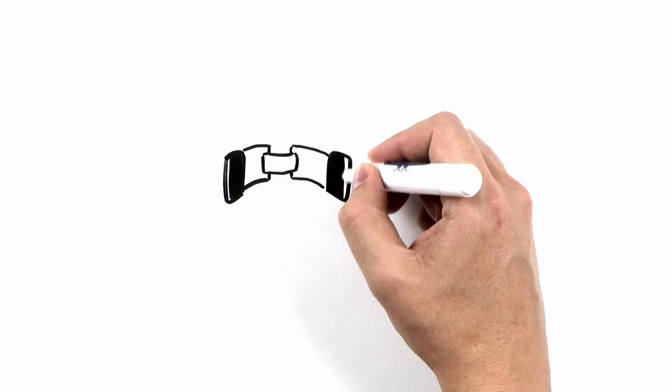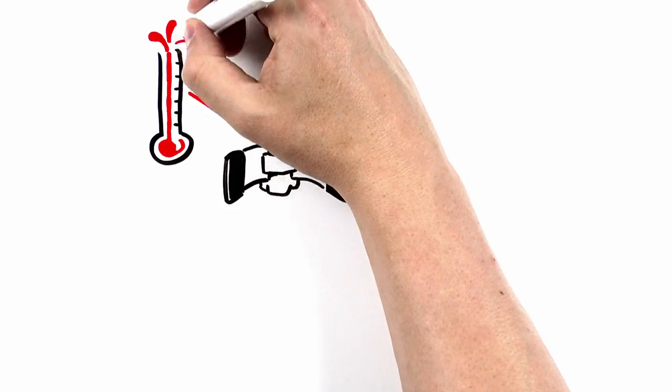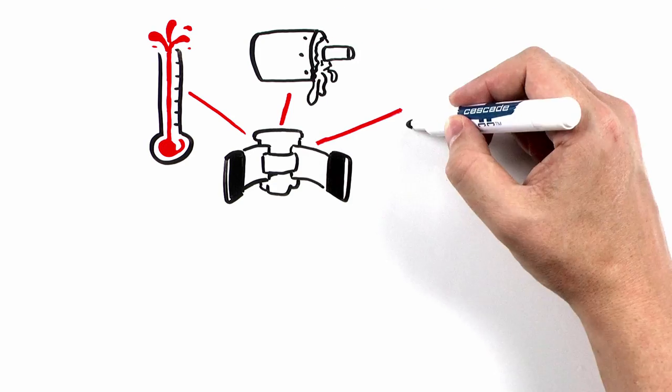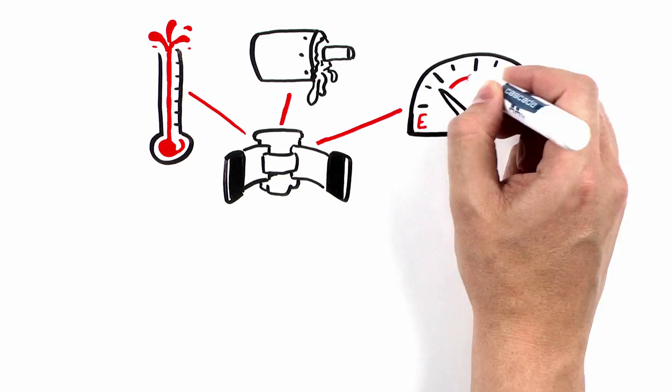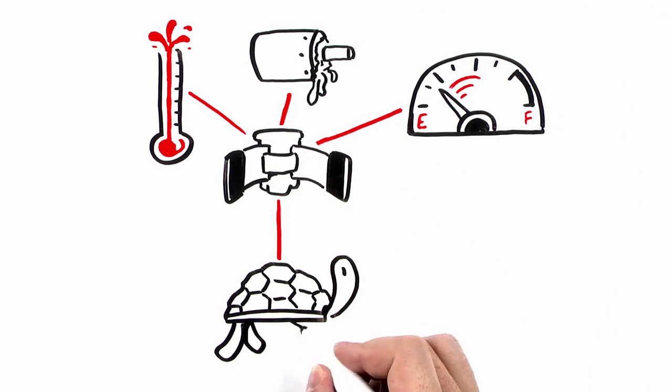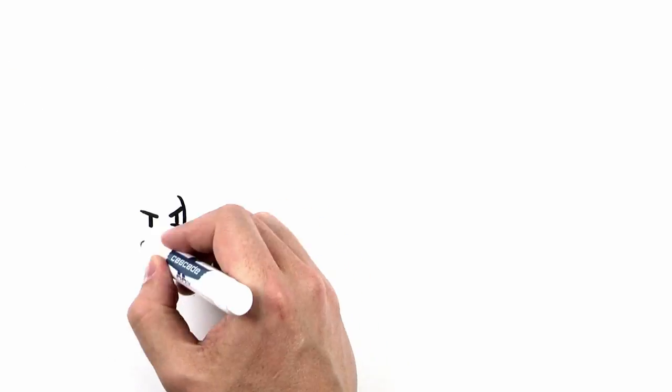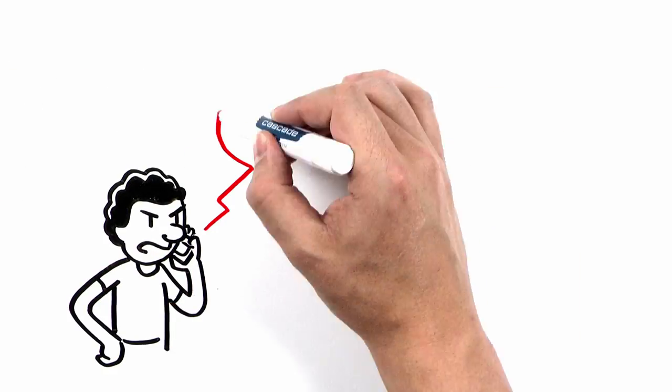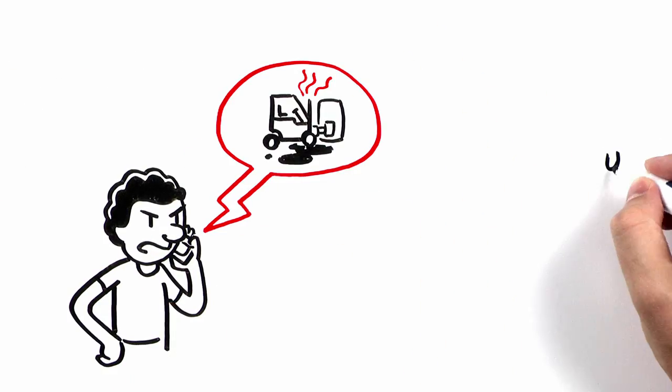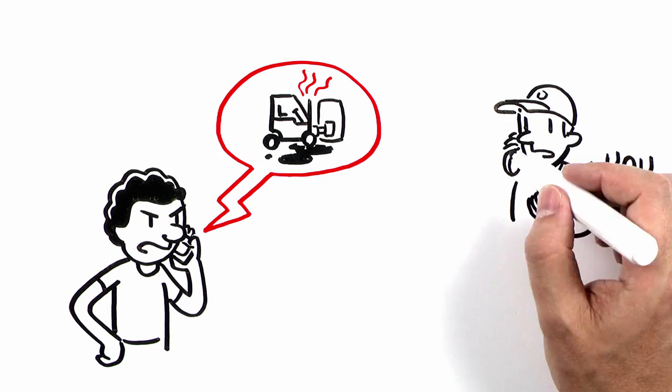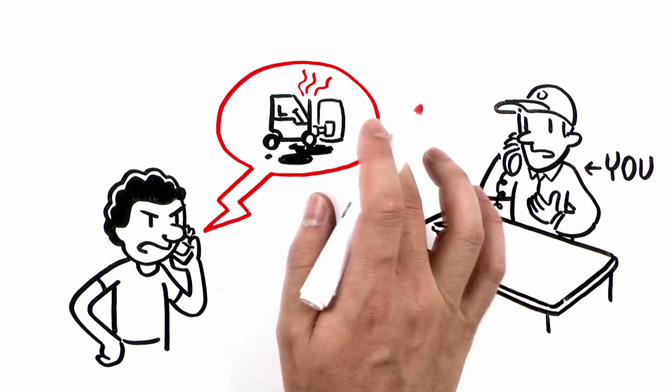For a forklift attachment package, these problems rear their ugly heads in the form of overheating, leaky hydraulics, excessive fuel or energy consumption, and slow attachment speed. And since these unwanted issues are usually blamed on the forklift, you and your dealership's reputation is unfortunately likely to suffer the most.